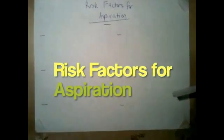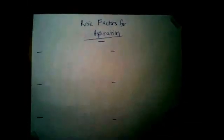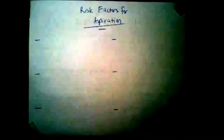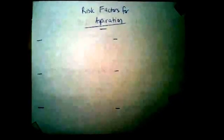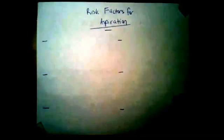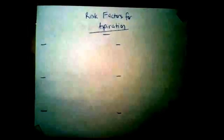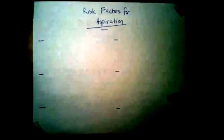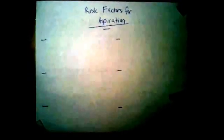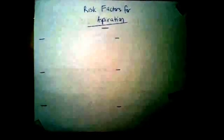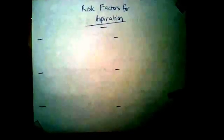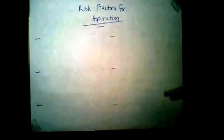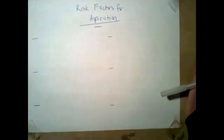I just want to do a short video discussing the risk factors for aspiration in anesthesia. This is important because risk factors for aspiration form a very important part of the preoperative anesthetic assessment, because it's a large part of the decision when giving general anesthesia as to whether or not you need to secure a patient's airway — i.e., put in an endotracheal tube. When thinking about risk factors for aspiration, you can group them into six categories.